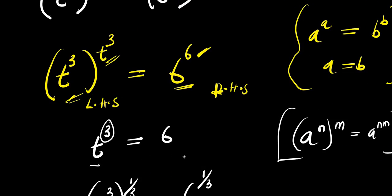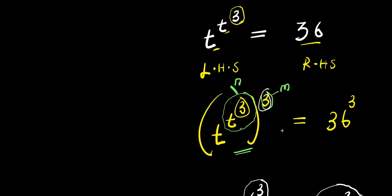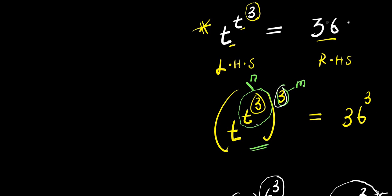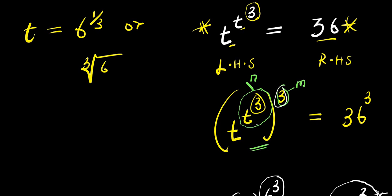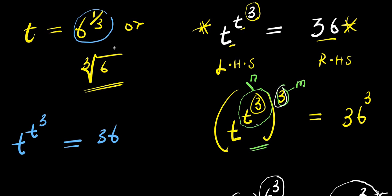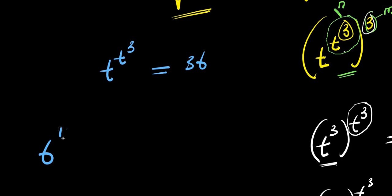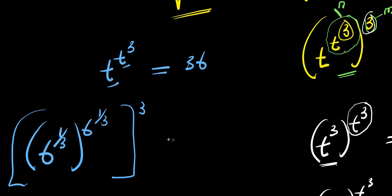That is the solution. Now the next thing we are going to do is insert that value of t back into this equation and check if the left hand side gives us the same thing as the right hand side. Our t equals 6 to the power of 1 over 3. So we are going to plug in: 6 to the power of 1 over 3, raised to the power of 3. This is t, raised to the power of 3, and this equals 36.